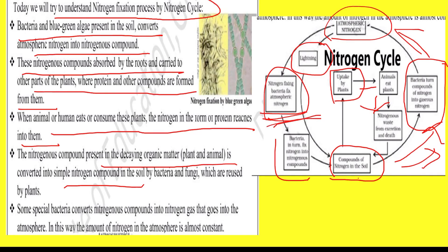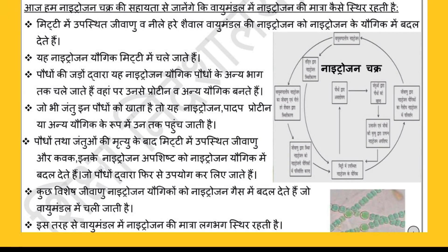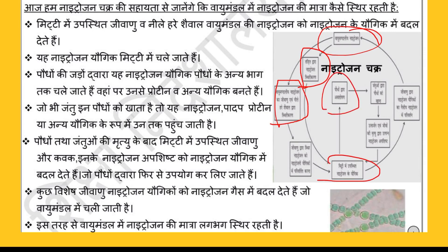Do cheezein yaad rakhni hain: yeh wala jo hissa hai — denitrification hai, aur yeh nitrification hai. Jab hum nitrogen chakra ki baat karte hain, toh nitrogen plants se janwaro mein jati hai, aur wahan se phir wapas jameen mein. Jameen mein phir kuch aur jivanu hote hain jinke dwara wo usko todh kar wapas vatavaran mein bhej dete hain.